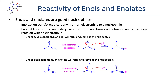Enolizable carbonyls can undergo alpha substitution reactions via enolization and subsequent reaction with an electrophile. Under acidic conditions, an enol will form and serve as the nucleophile. In this example, we see a ketone enolized to give an enol. The pi bond of the enol then attacks an electrophile, ultimately leading to alpha substitution. A lone pair on the adjacent oxygen moves towards the alkene, enhancing the nucleophilic character of the pi electrons.